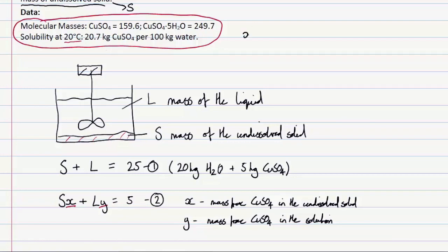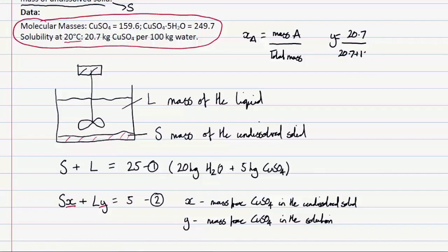Using the definition that the mass fraction of component A equals the mass of component A over the total mass, we can say that for a saturated solution of copper sulfate, Y — the mass fraction of copper sulfate in that saturated solution — equals the mass of copper sulfate divided by the total mass, which is 20.7 plus 100. This gives us Y = 20.7 / 120.7. So we've found our Y.